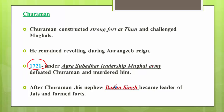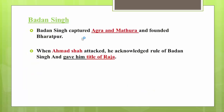Badan Singh constructed various strong forts and captured Agra and Mathura. He founded the Bharatpur state. When Ahmad Shah Abdali attacked, he acknowledged the rule of Badan Singh and gave him the title of Raja. So the title of Raja was given to Badan Singh by Ahmad Shah Abdali.